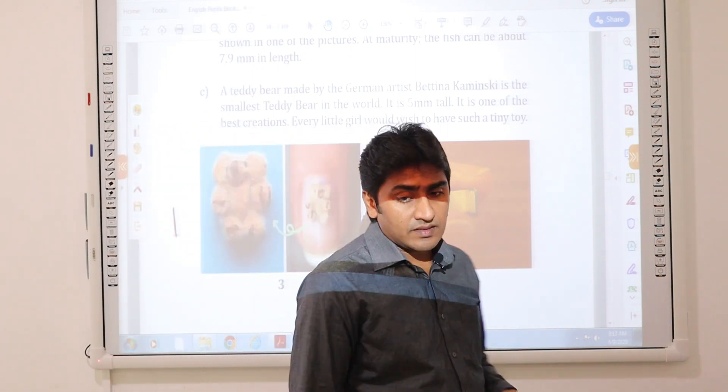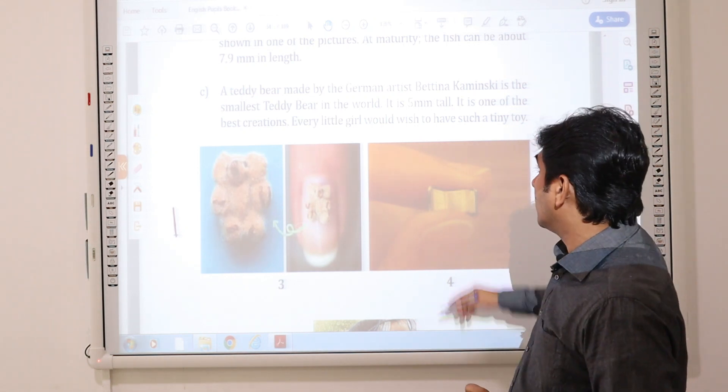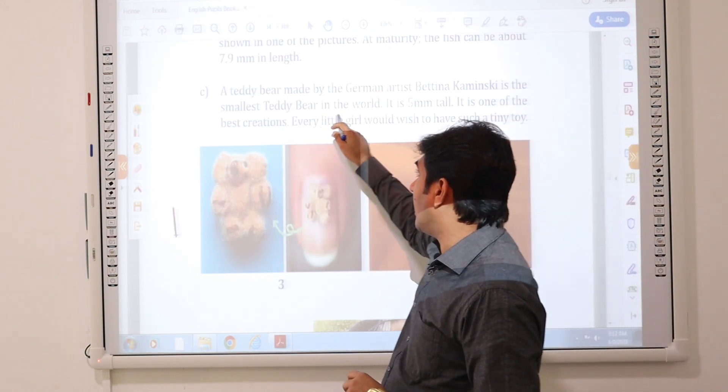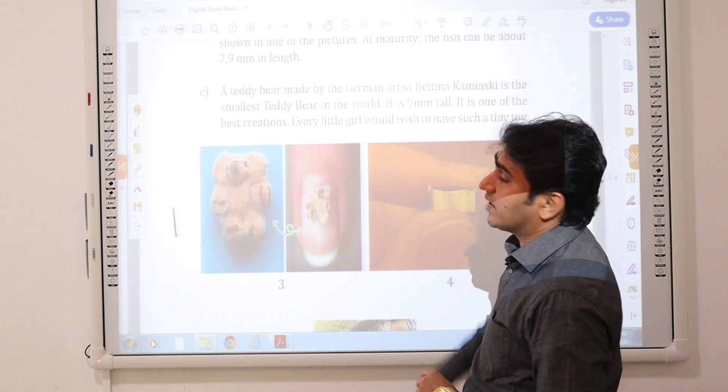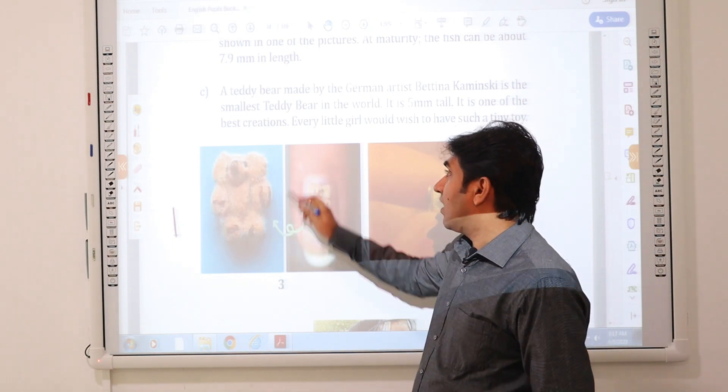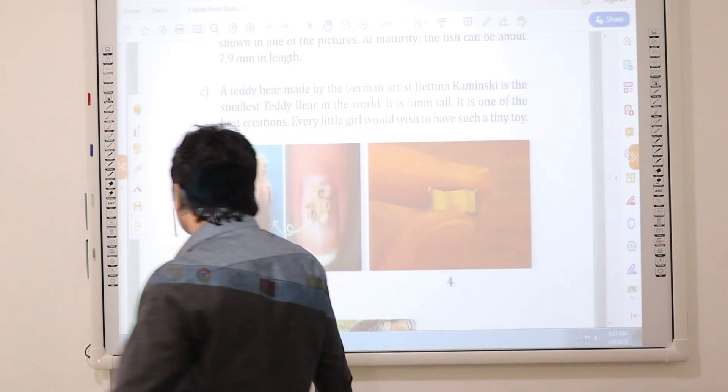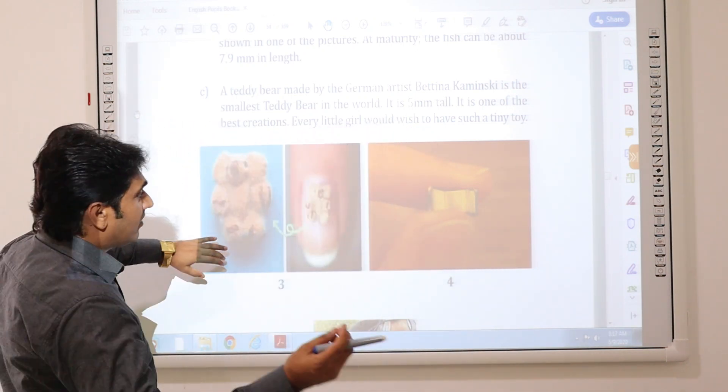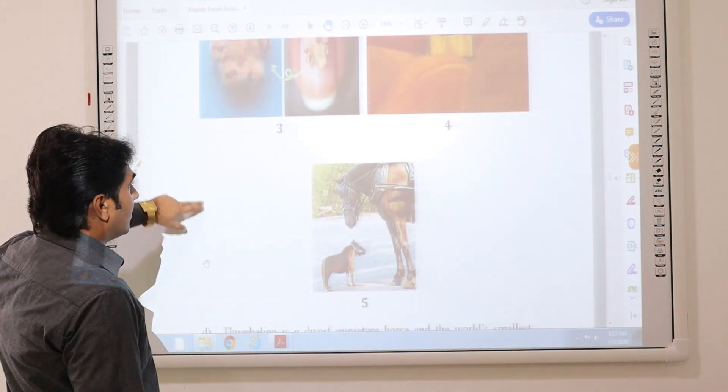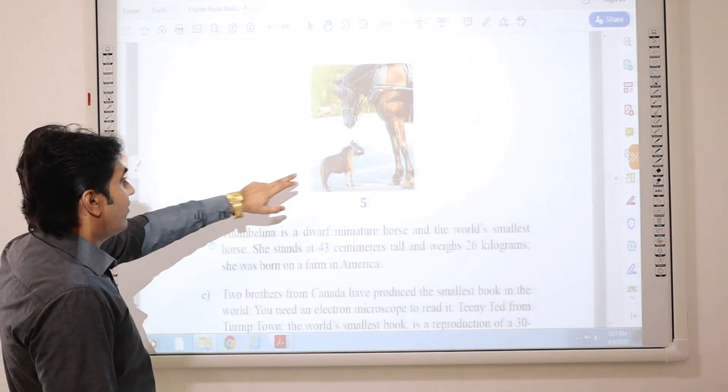A teddy bear made by the German artist Bettina Kamensky is the smallest teddy bear in the world. It is 5 millimeters tall. It is one of the best creations. Every little girl would wish to have such a tiny toy. This is the smallest Bible. You can see.